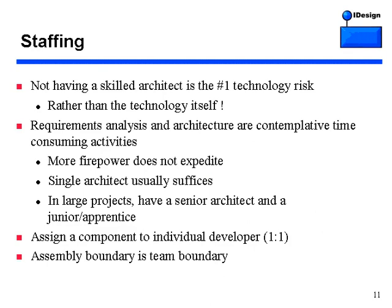I firmly believe that not having a skilled architect is the number one technology risk in any project — usually much larger than the technology risk itself. When staffing a .NET project, the most important thing is getting a skilled .NET architect, someone with experience in decoupling the system and decomposing it into components that are just right. You might ask: should we get two or three architects? It turns out architecture is a task that more firepower doesn't expedite. You very quickly run into the nine women, one month, baby problem.